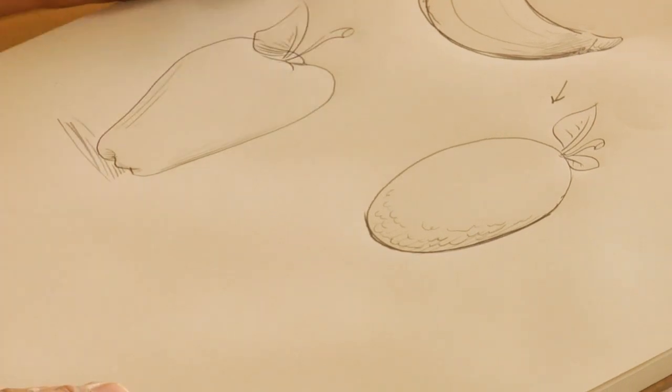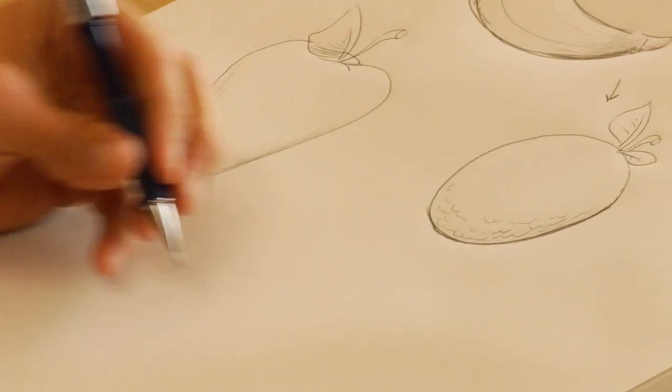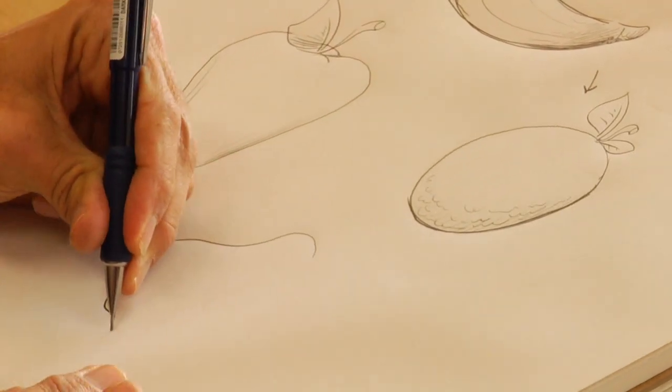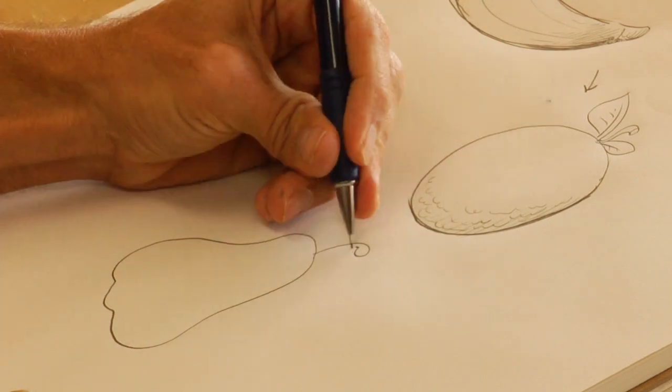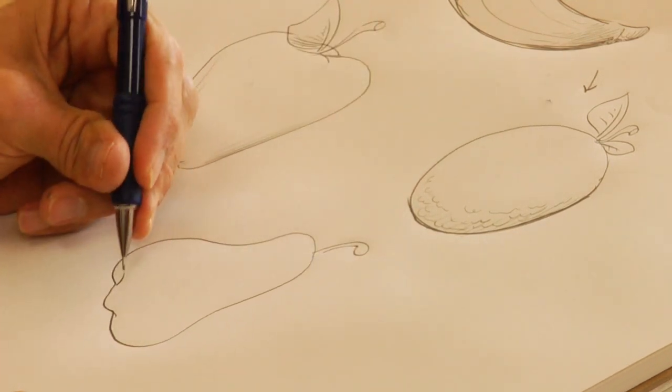All right, that's four, and then if you want to draw a quick pear, it's almost like drawing a bell, the Liberty Bell. Okay. And that's how you draw fruit.